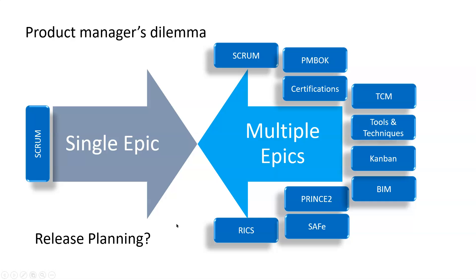One of the product manager's dilemmas is how to release these videos. Even if we decide to release videos based on all these epics, how do we plan those releases? One option is to focus on a single epic — say, focus only on Scrum — and release all related videos in one stream, maybe over three months. The advantage: people with specific interest in Scrum will subscribe, and we can release a complete playlist of maybe 10–20 videos quickly.